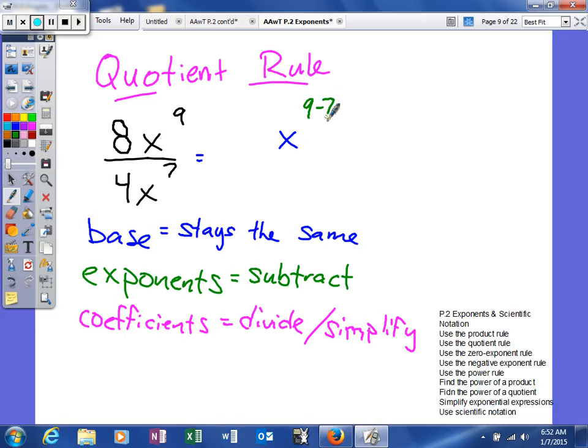And then your coefficients we're going to divide or simplify. So looking at a problem like this, what I would do is I would come up here and say, well 4 will go into itself once, so we'll go into 8 twice, so we'll get 2. So our answer to a problem like this is actually going to be 2x to the second.